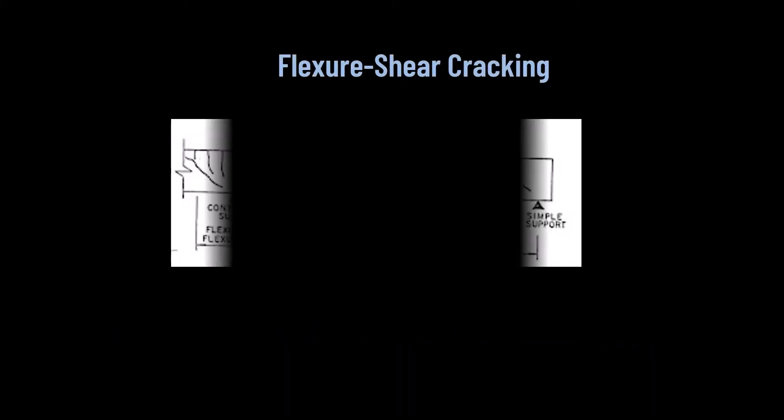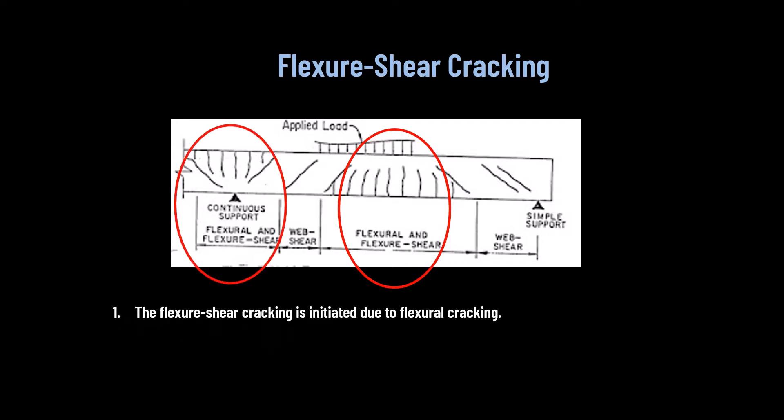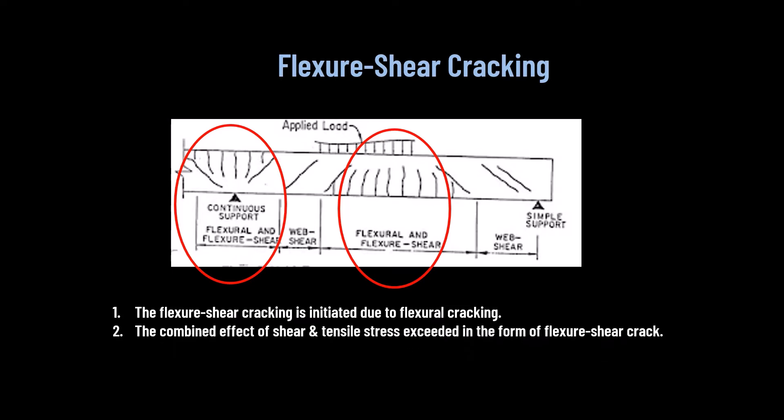Flexural shear cracking is initiated due to flexural cracking. When flexural cracks — cracks due to bending of the beam — occur, the shear stresses in the concrete above the flexural crack increase. This shows a combined effect of shear and tensile stress exceeding capacity, resulting in a flexural shear crack. Flexural cracks precede flexural shear cracks, and the formation of flexural shear cracks is not predictable.